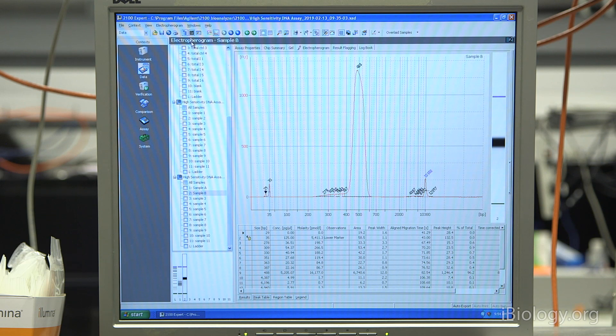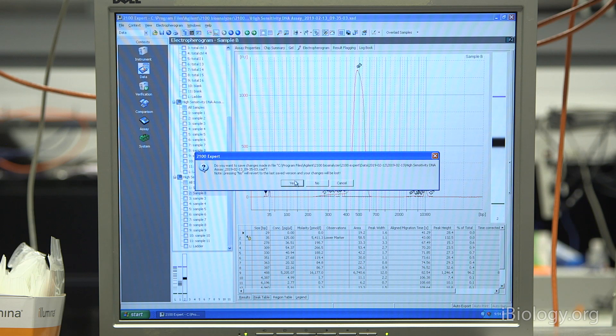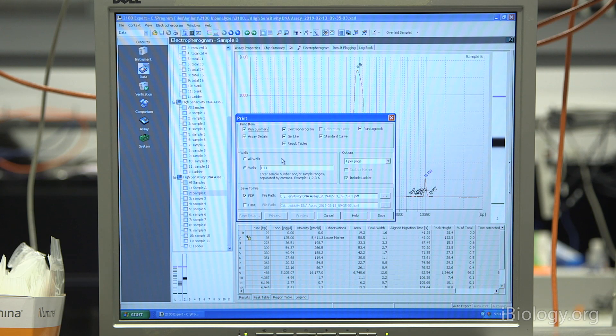Once your data looks like it's all been set and all the peaks have been properly called, you can export this as a PDF by clicking the printer button on the toolbar. Sometimes it'll ask you if you want to save any changes. I said yes, I want to save those peak changes that I made. A window will show up and it will give you options of what type of items to select. We just leave this as a default. You can tell it to print all wells or just the wells that you have samples. For us, we only had two samples.